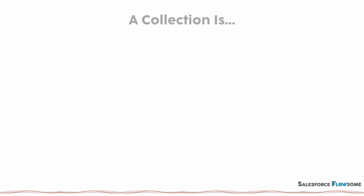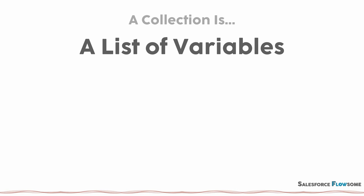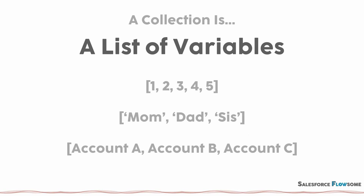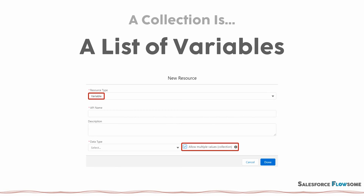Finally, the collection is just a list of variables. It can be a list of numbers, a list of texts, or a list of records. You just need to check 'allow multiple values' to create a collection. That's it for variables and collections.